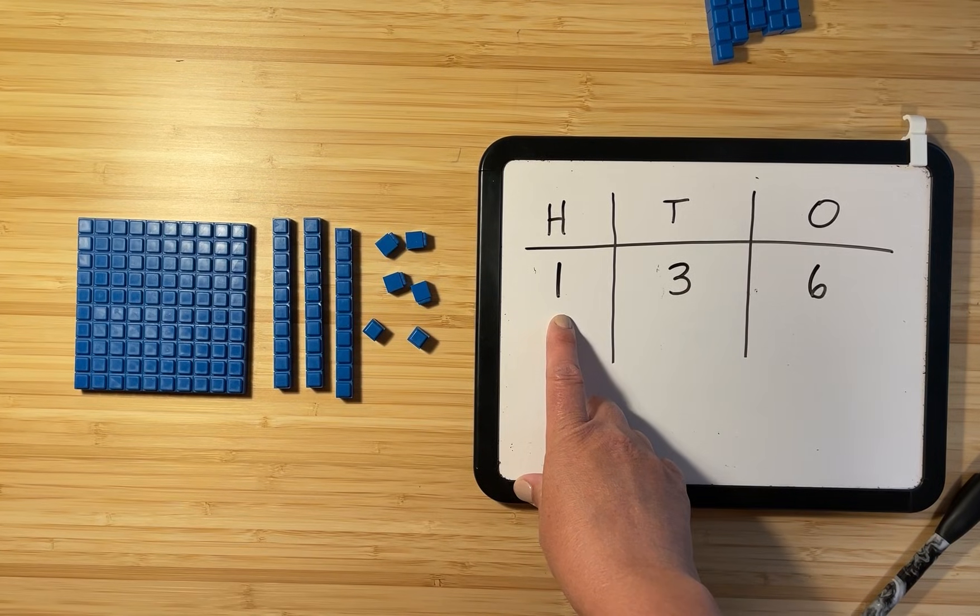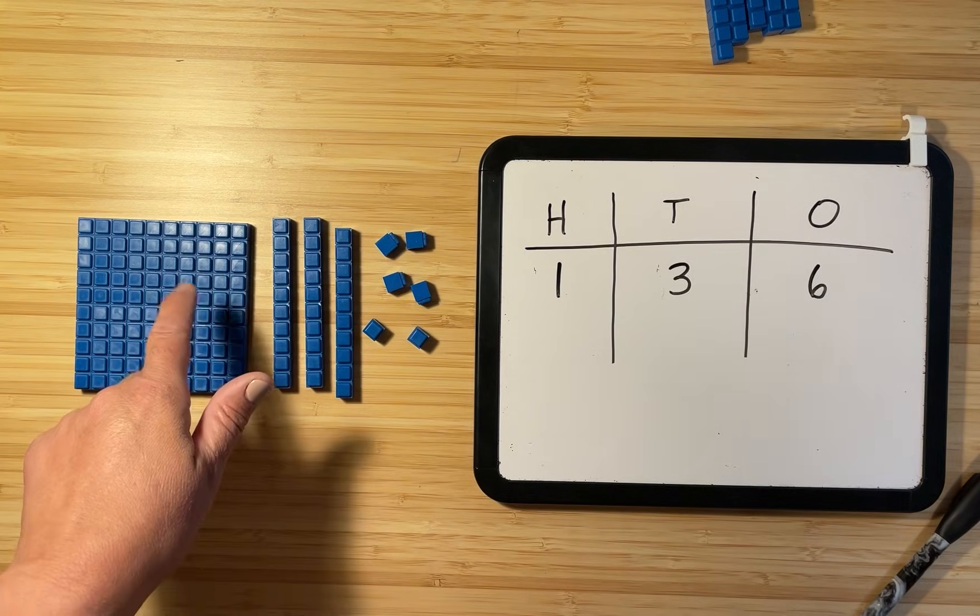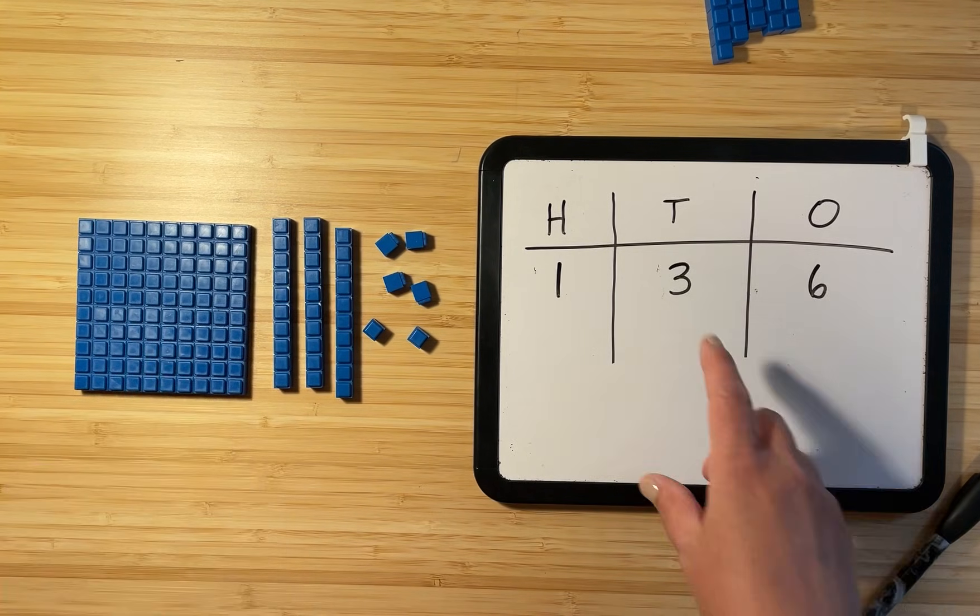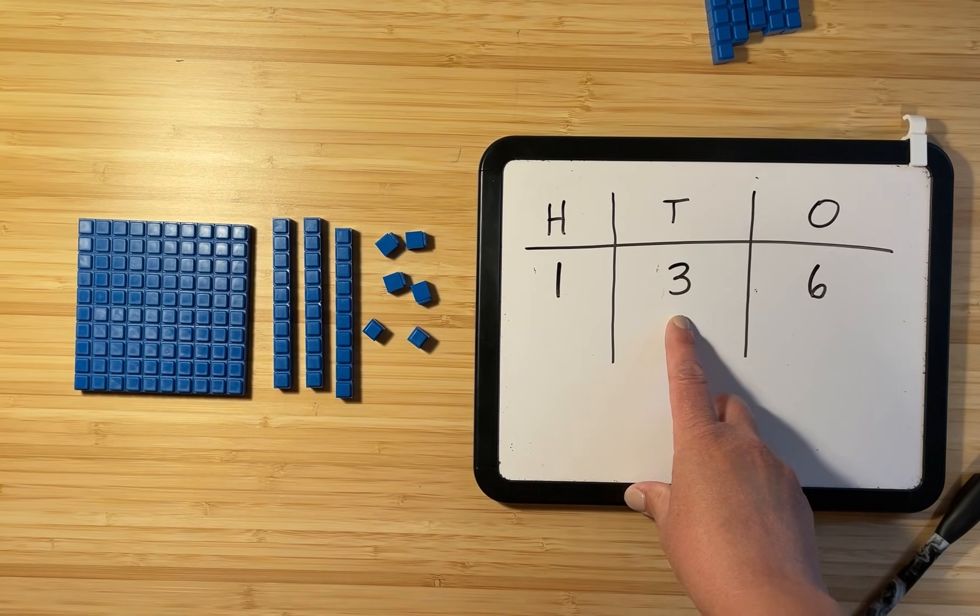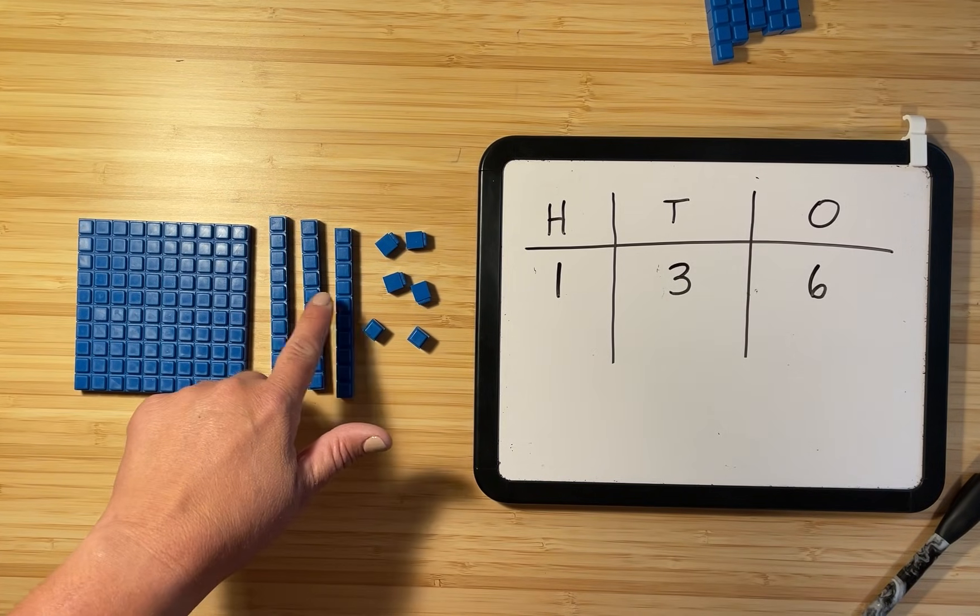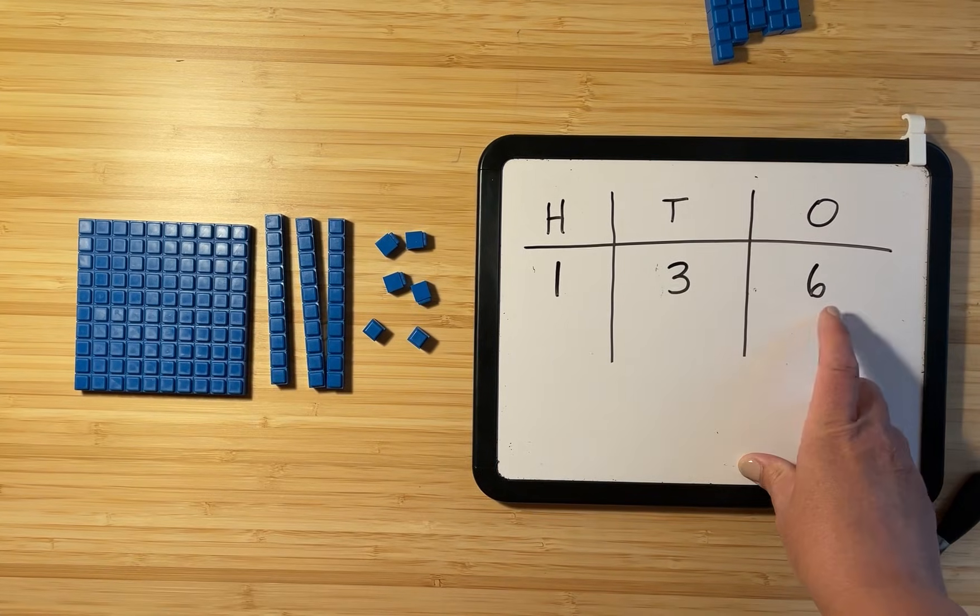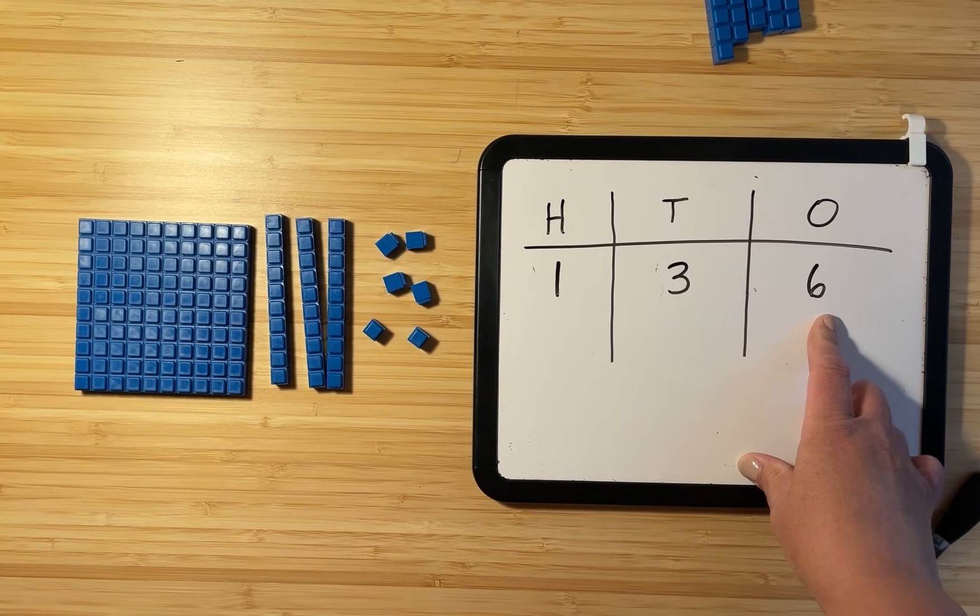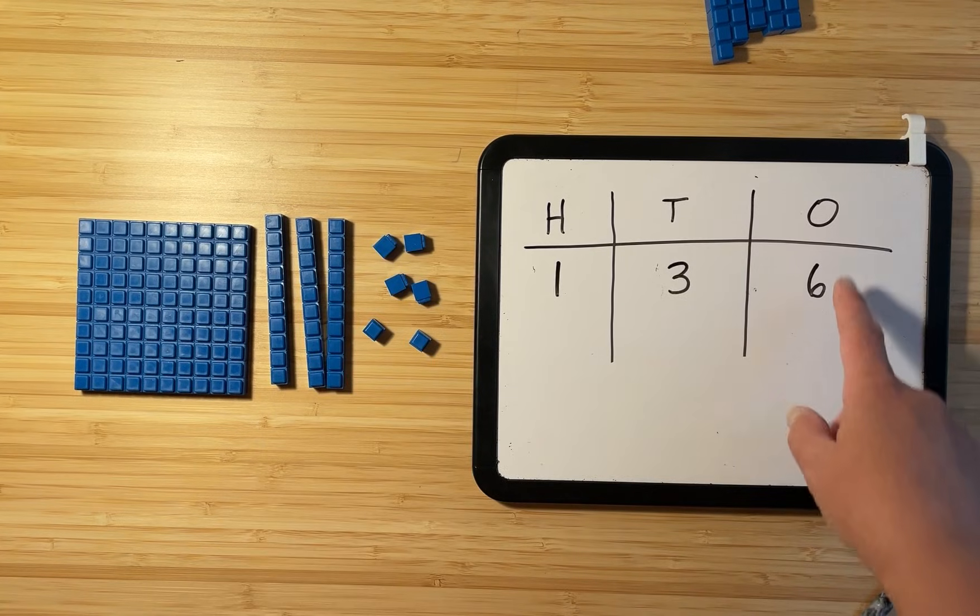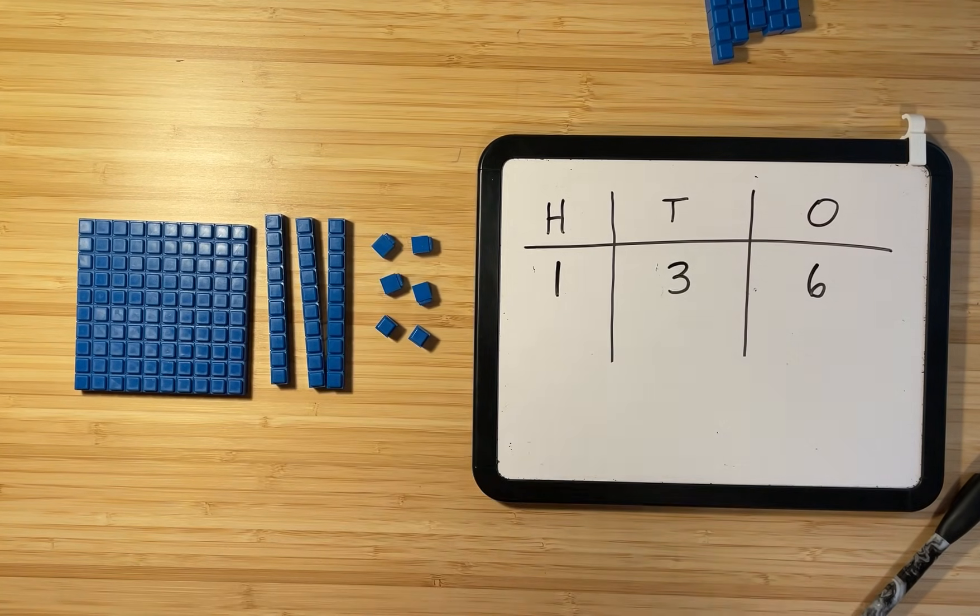This digit right here, this one, it's not actually a one, is it? It's actually a 100. This digit right here, it's not actually a three, it's really a 30, because we have three tens, which makes 30. This number here is actually six, because that's the ones column. So we know that we just have six little ones. So there's the number 136.